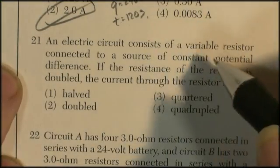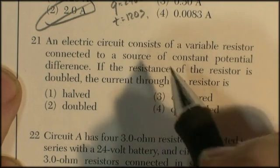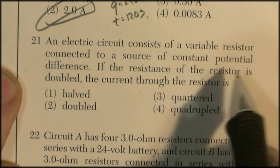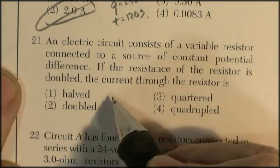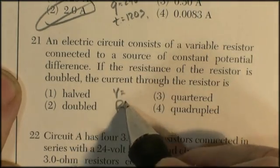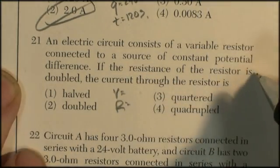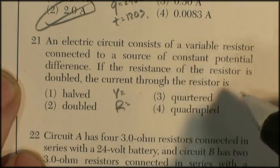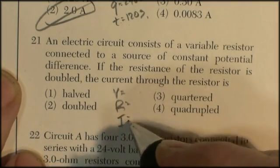Question 21. An electric circuit consisting of a variable resistor is connected to a source of constant potential difference. You've got some voltage. You've got some resistance. If the resistance is doubled, the current is, so this is voltage, current, and resistance.